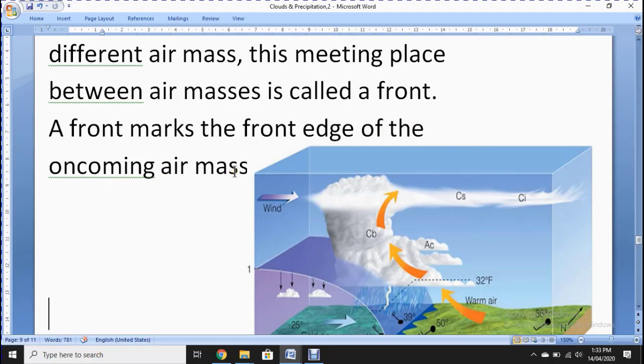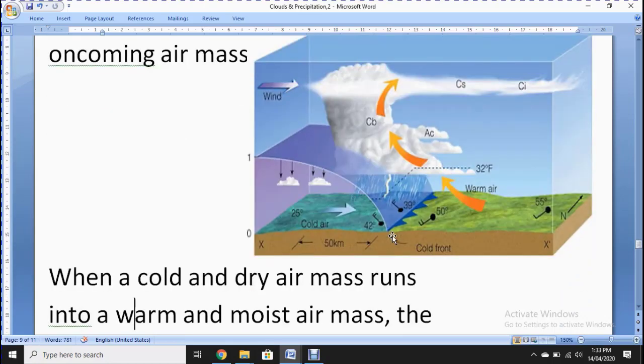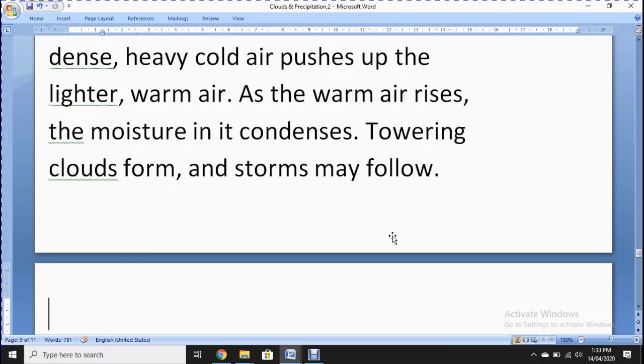A front is an edge that forms by the combination of two types of air due to temperature change, dryness, warmth or cold.